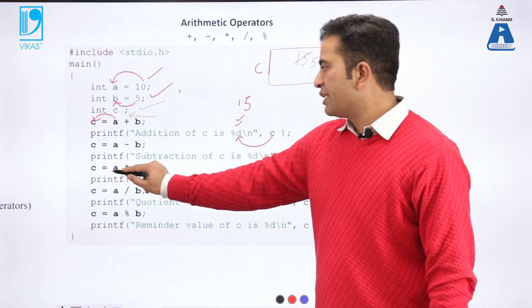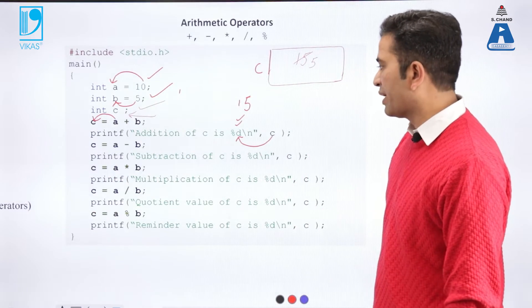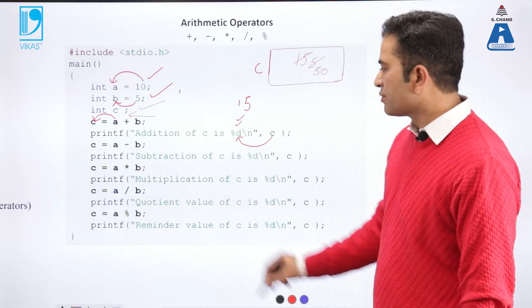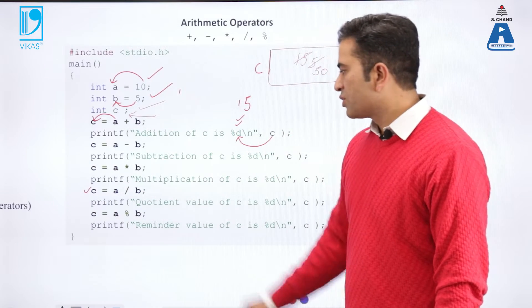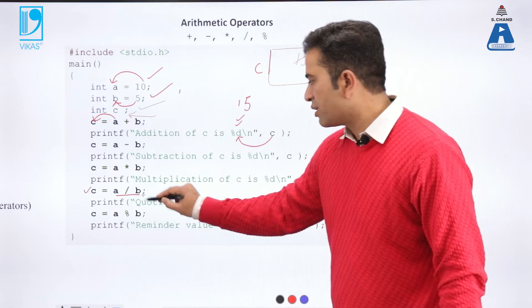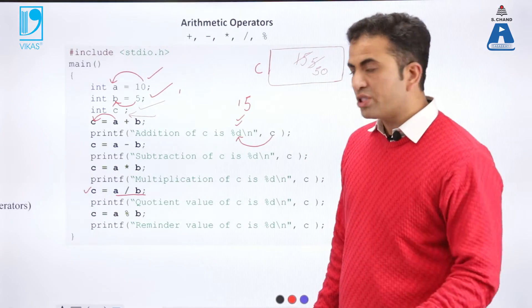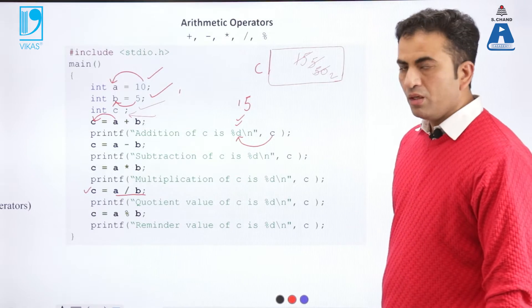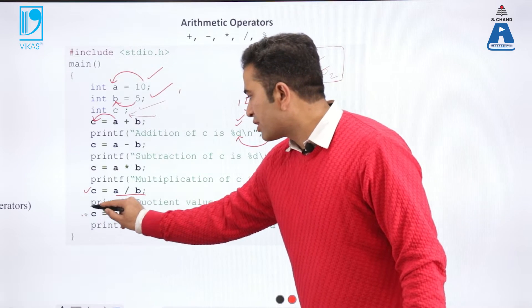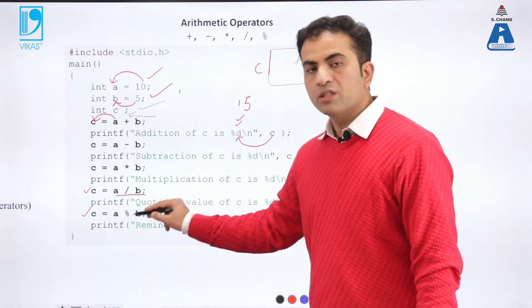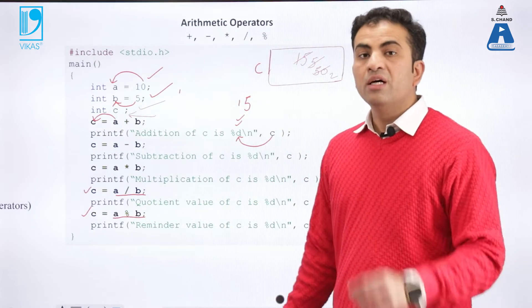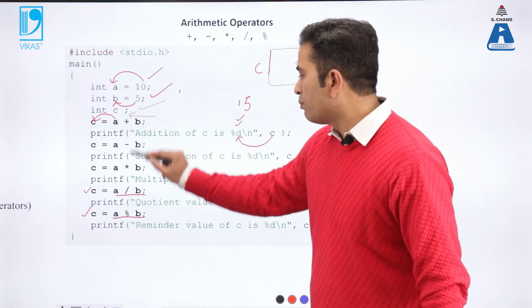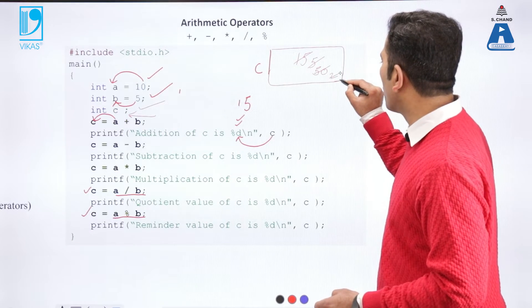The third expression is a star b, that is a multiplied by b. So 10 and 5 gives 50 — it replaces 5 and updates the value to 50. Then we have division: c equal to a divided by b. This expression gives us the quotient. 10 divided by 5 gives the value 2. And the percentage sign is called modulus — a modulus b. The output of this expression is the remainder. So 10 modulus 5, the remainder is 0, and finally the output is 0.